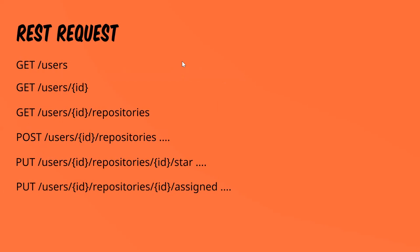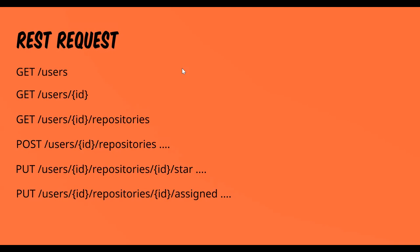This is the regular REST requests you're used to: give me users, give me information about a user ID, then give me all repositories for that user ID, add a repository, put a star on a repository, assign people to that repository. The problem is that in HTTP 1.1, all the time you need to make new connections, which is a very heavy operation.